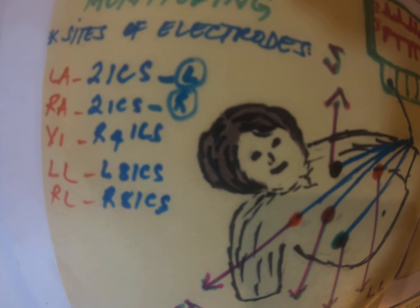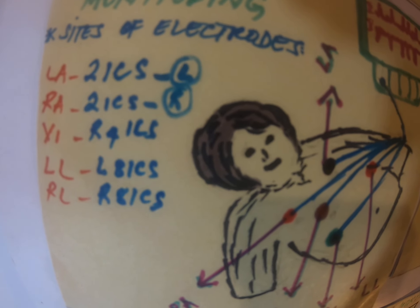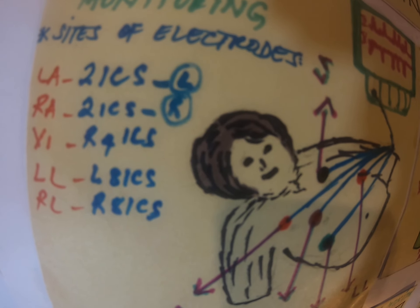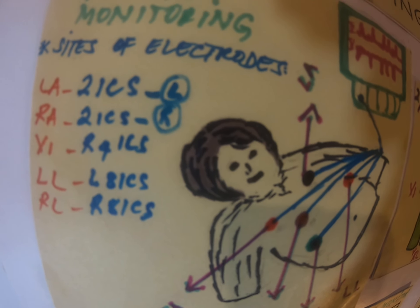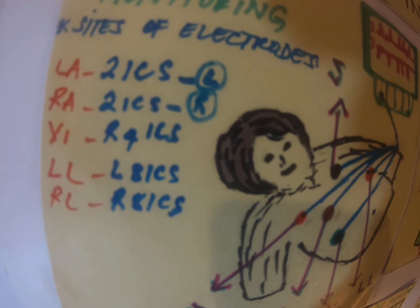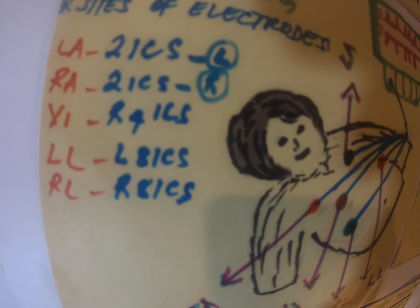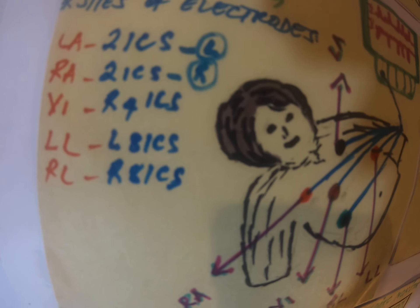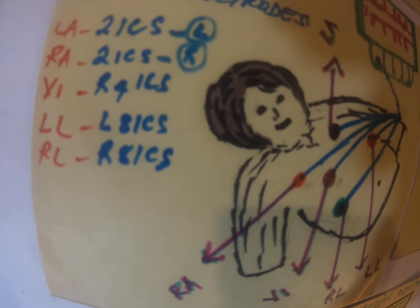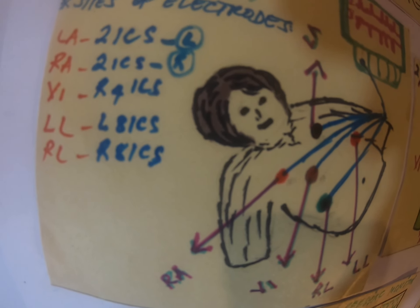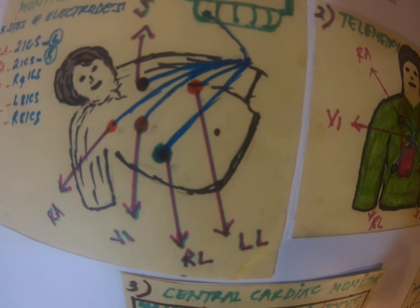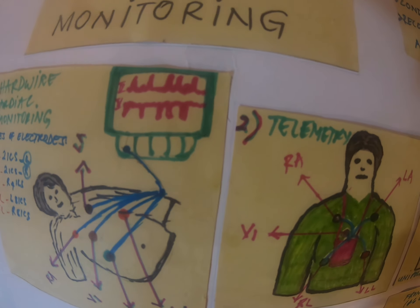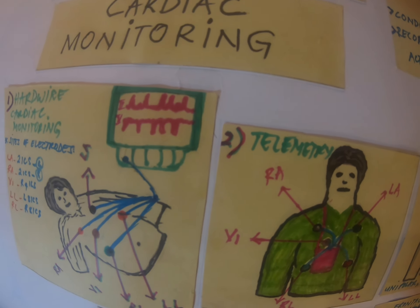The left arm electrode goes to the left second intercostal space. The right arm electrode goes to the right second intercostal space. There is the chest electrode at the right fourth intercostal space. The left leg electrode is at the left eighth intercostal space, and the right leg electrode is at the right eighth intercostal space. Those are the electrode placements for hardwire monitoring.